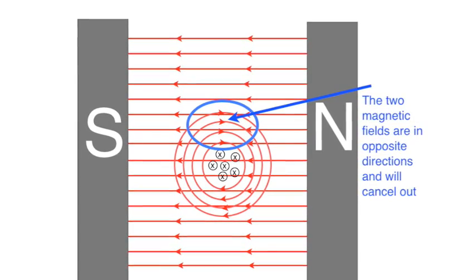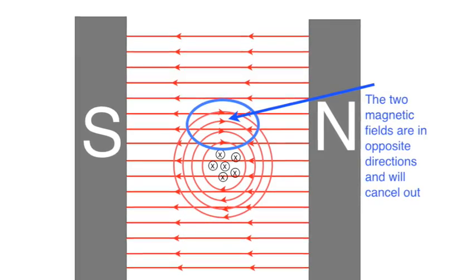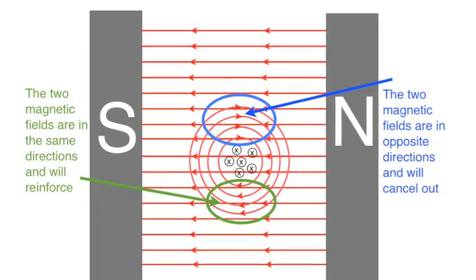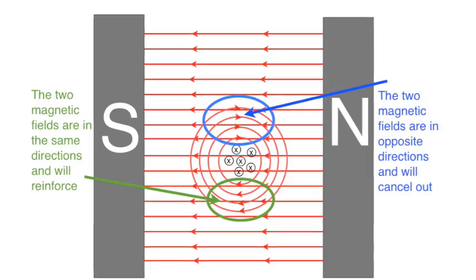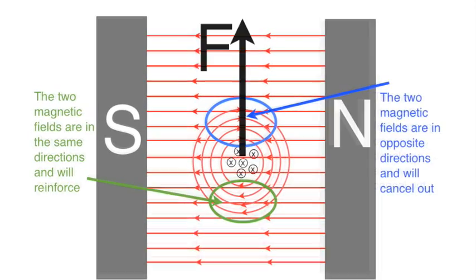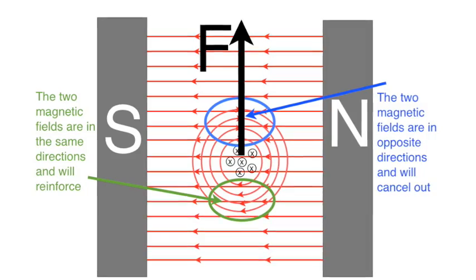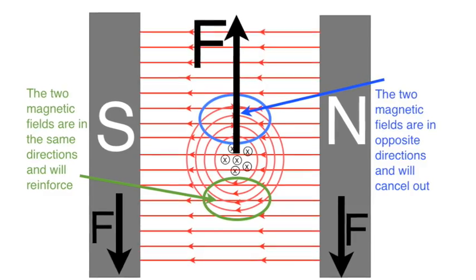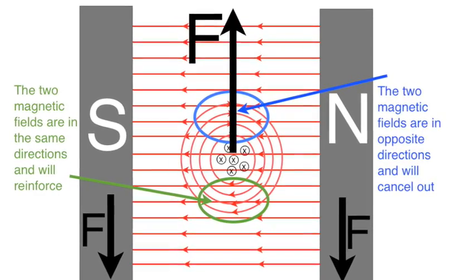Above the wire the two fields run in opposite directions and therefore tend to cancel out. Below the wire they run in the same direction and therefore reinforce one another. The wire is pushed away from the strong field towards the weak one, in this case upwards. At the same time the magnets are pushed in the opposite direction, downwards.